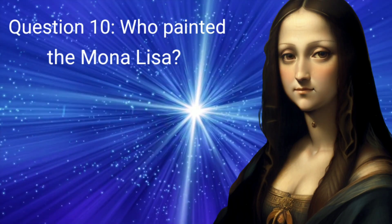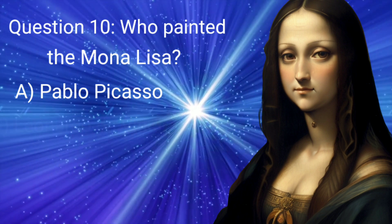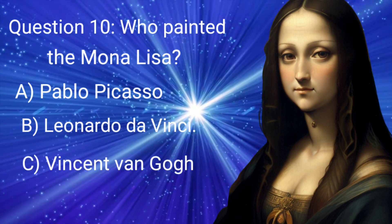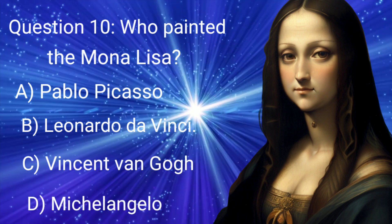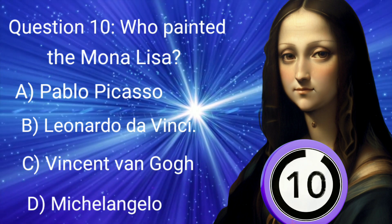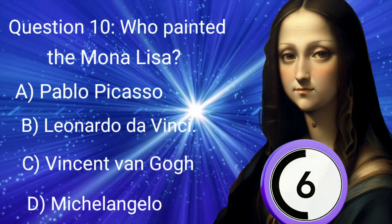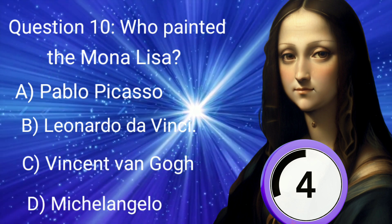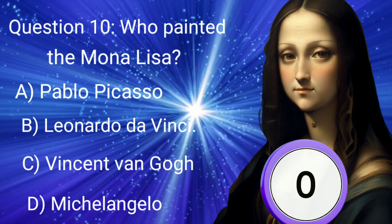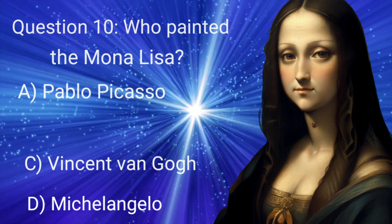Question 10. Who painted the Mona Lisa? A. Pablo Picasso, B. Leonardo da Vinci, C. Vincent van Gogh, D. Michelangelo. You have only 10 seconds in your hand to think. Your time is starting now. Okay, friends, your time is up. The right answer is B. Leonardo da Vinci.